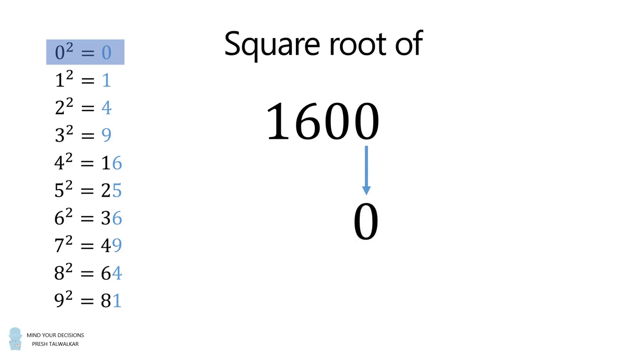Then, we cross out the hundreds and units digits. We're left with the number 16. We now want to find the square that's closest to 16 without exceeding 16. In this case, 4 squared is equal to 16 exactly. So, we will write the digit 4 here. Thus, the answer is equal to 40.